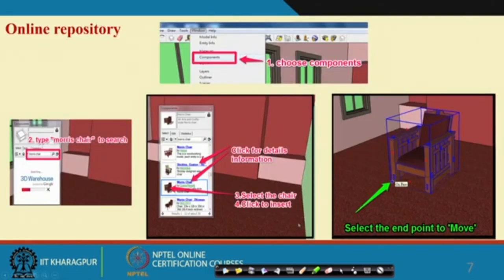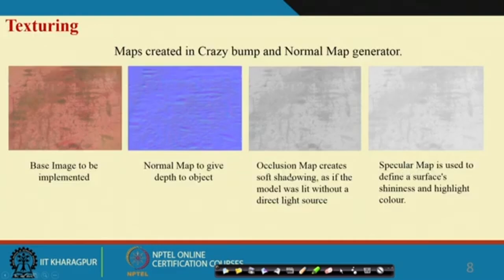If you are not able to create complicated 3D models, you can also use SketchUp's online repository. You can search for, say, a Morris chair, and it will come up automatically. You can directly drag and drop that 3D model into your software, and later you can add dimensions or any modifications you want to make to those 3D models.